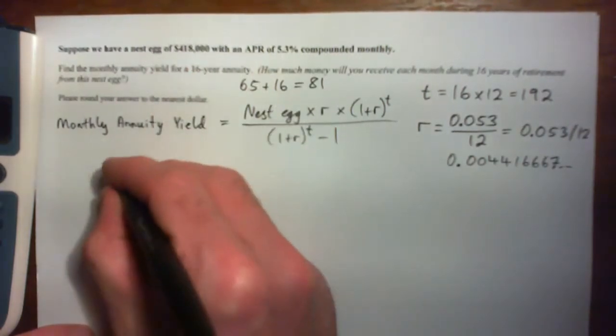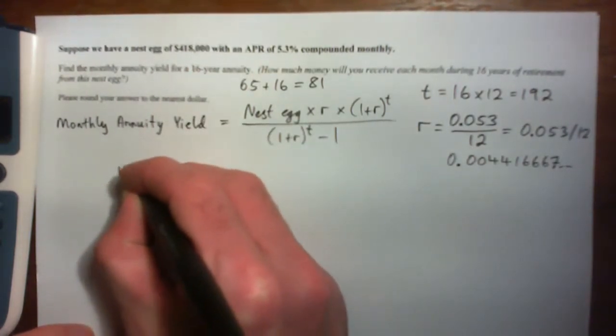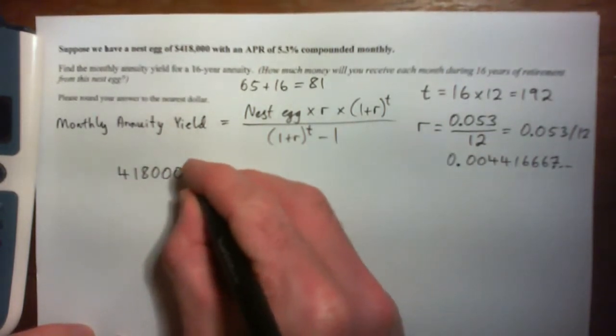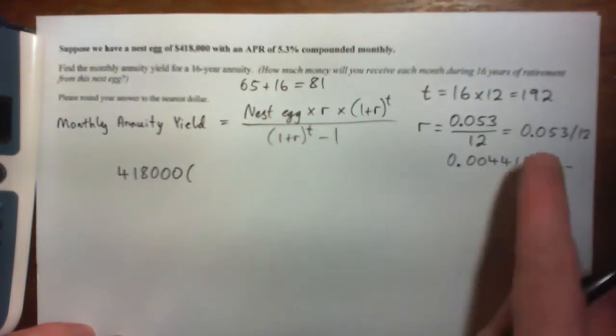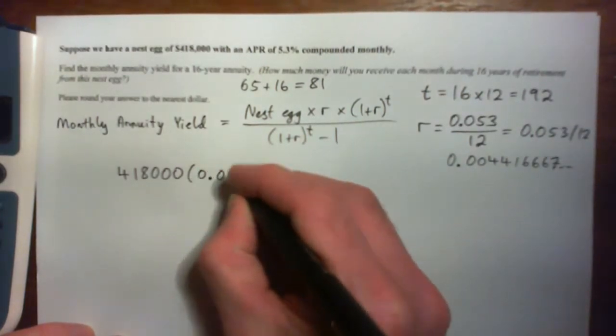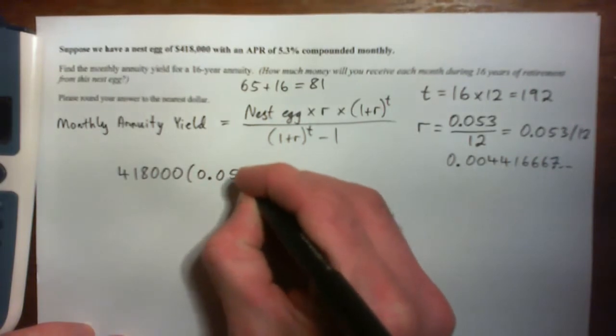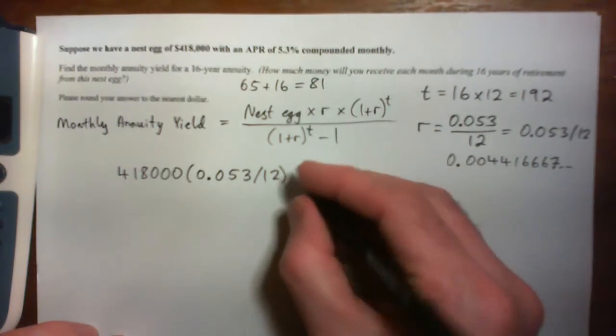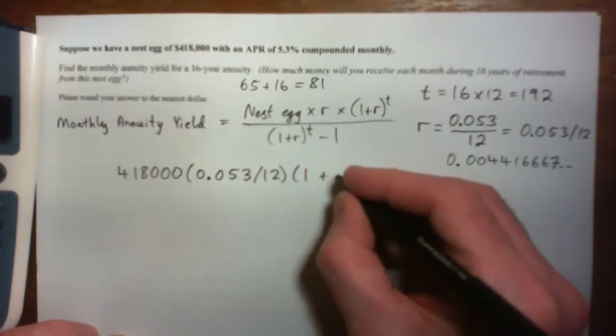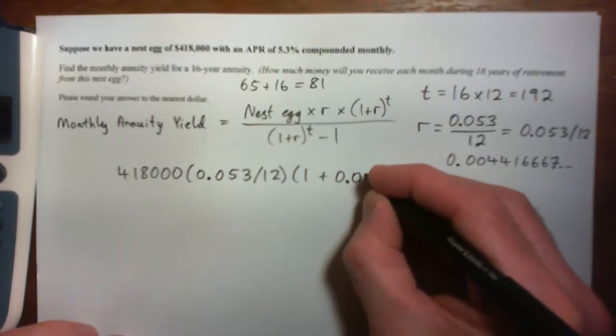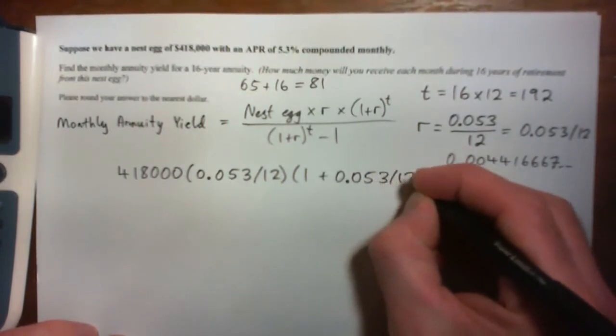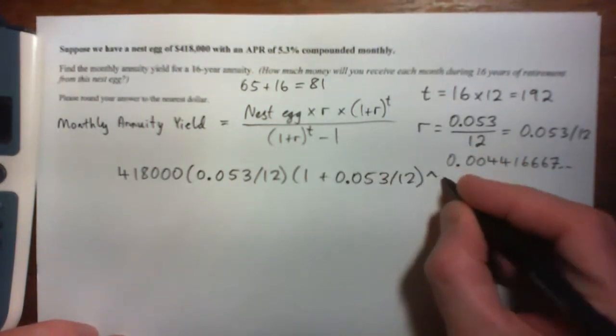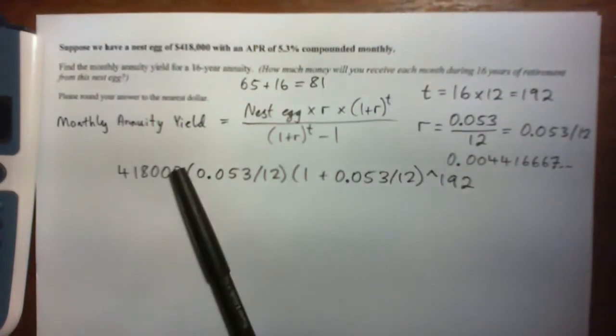Nest egg is 418,000. So we go 418,000, this is the top of the fraction, times R. So I'm going to do parentheses. I'm going to plug in 0.053 over 12 for my interest rate. And then times 1 plus R to the power of T. So I'm going to go 1 plus 0.053 over 12, then to the power of T. So to the power of 192. So there's a couple of things to talk about here. This is the top of the fraction.